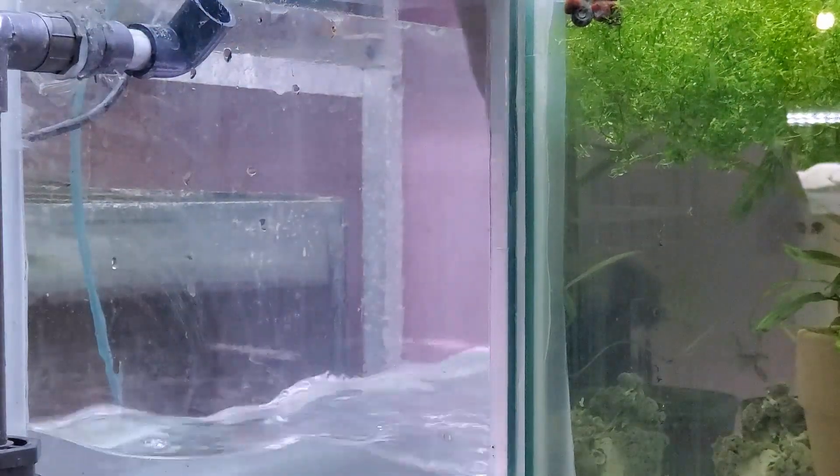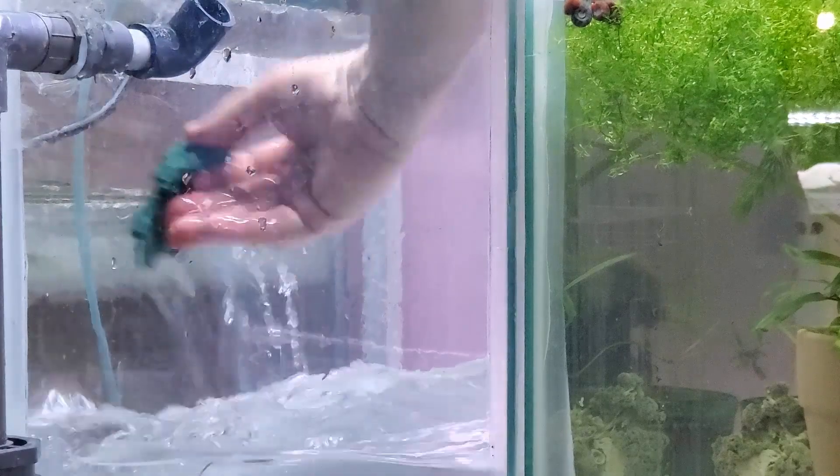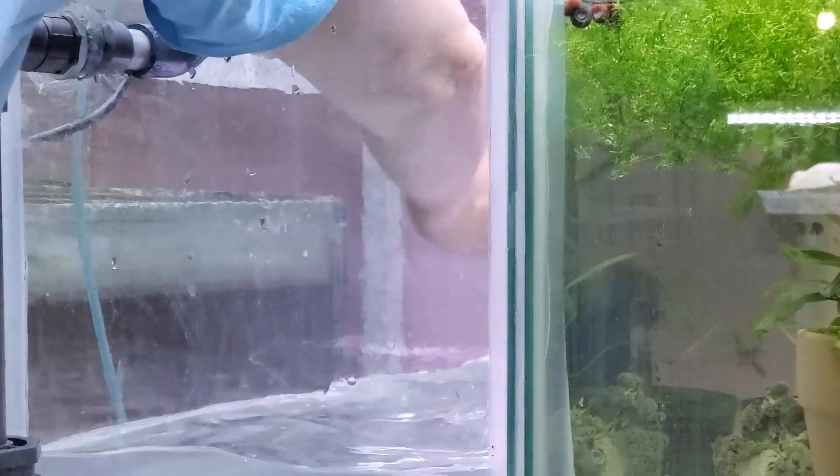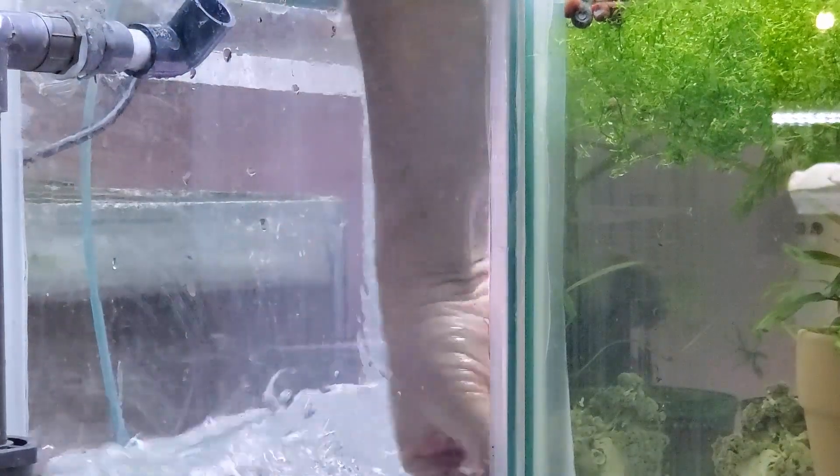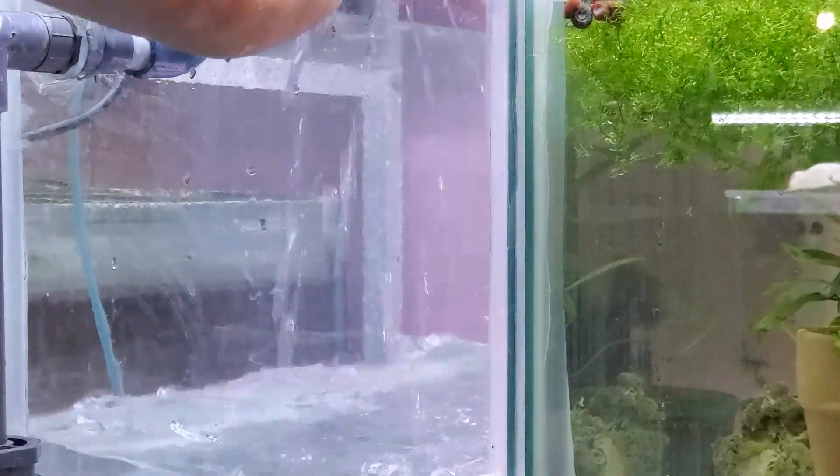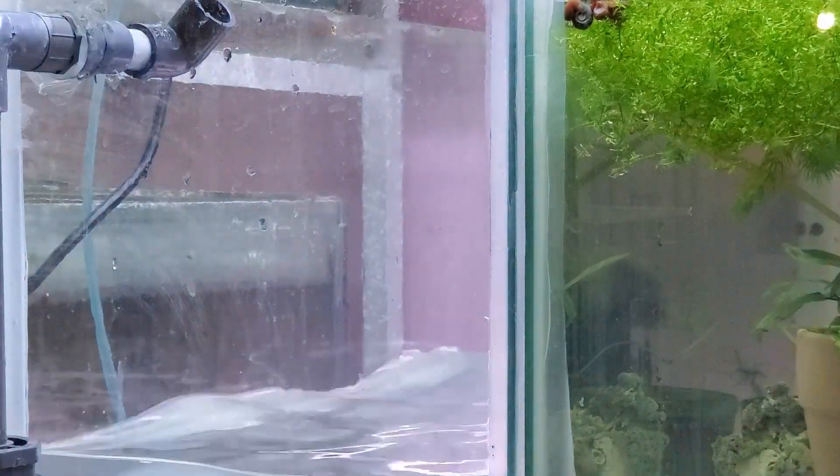But when I put the box filter in, because it is mature, some of the material in it is going to get into the tank and I want to make sure that's out. So that's how this is all going to run.